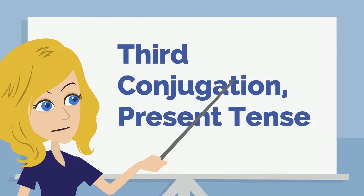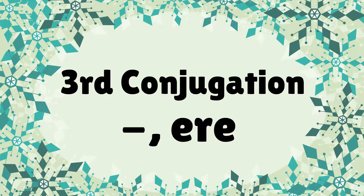Today, let's talk about forming the present tense of the third conjugation. The third conjugation is the conjugation with ERE as its second form. The E is a short E and therefore doesn't have the line on top of it.